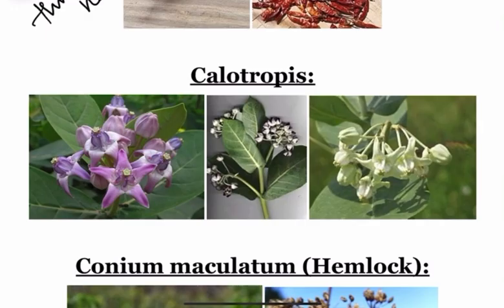Then we have Calotropis, also called as Akdu or Madar. The active principle is Calotropin, Calotoxin, or Calactin. Each and every part of this plant is toxic.